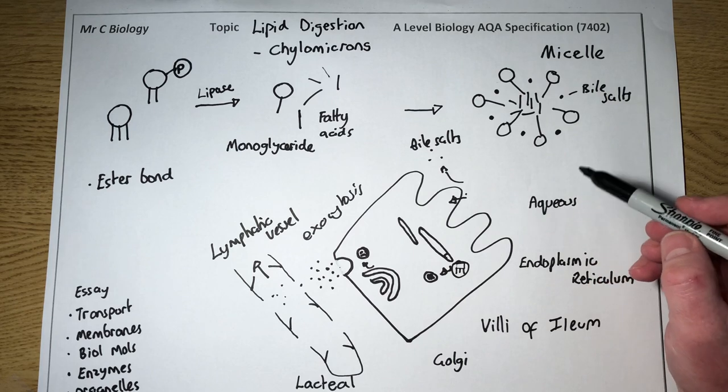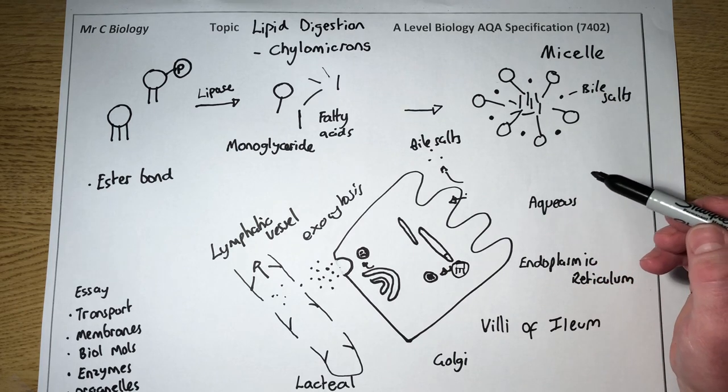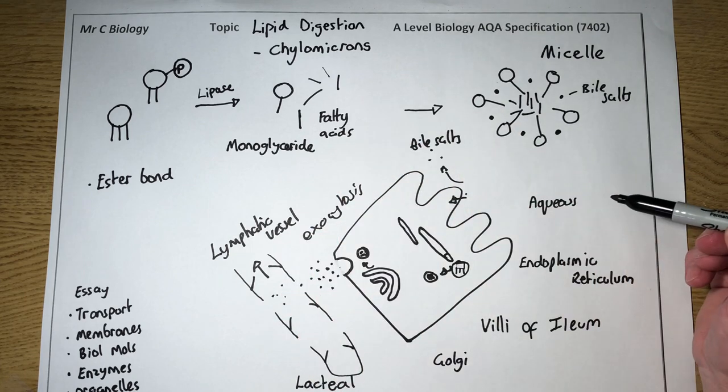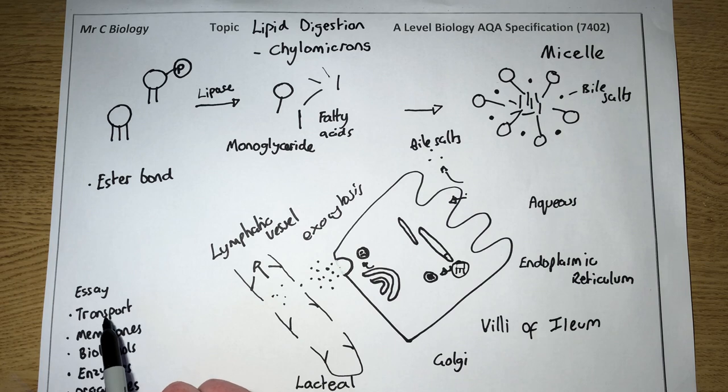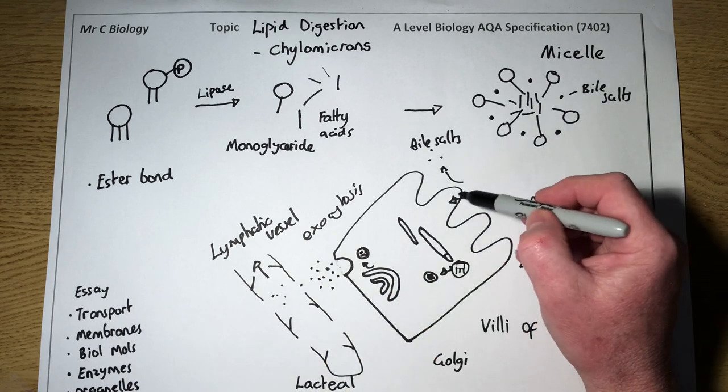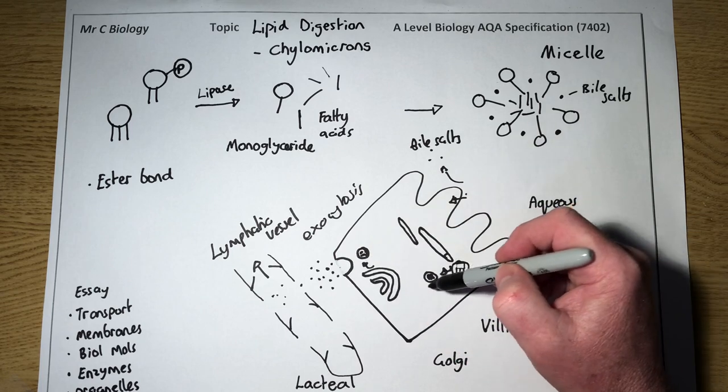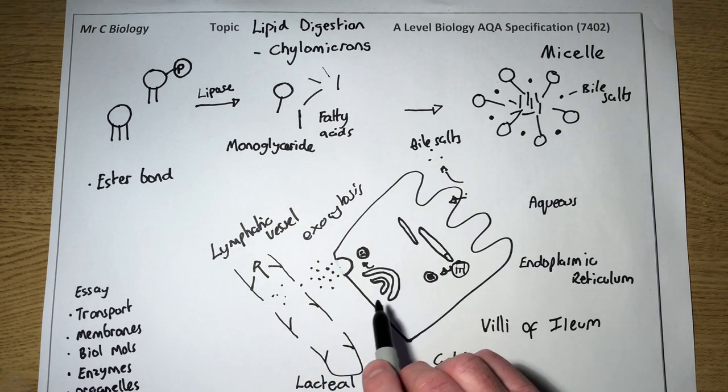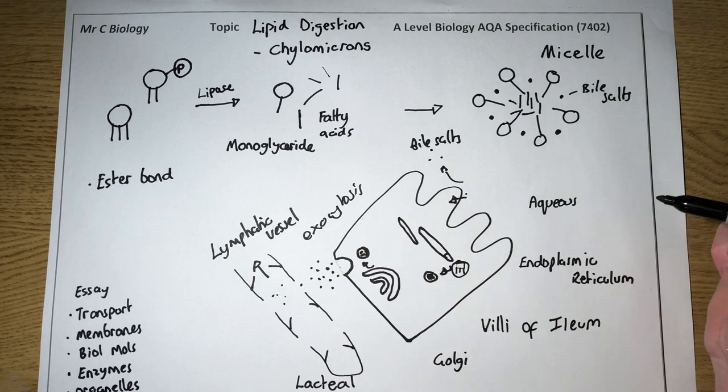So that's the digestion of lipids and the formation of chylomicrons. It involves lots of different things if you're thinking about this from a year 13 point of view for your essay. You've got transport of substances and molecules, we've got the role of membranes, exocytosis and vesicles all surrounded by membranes. We've got biological molecules, we've got the role of enzymes and lipase, and also the different roles of different organelles within the cell.